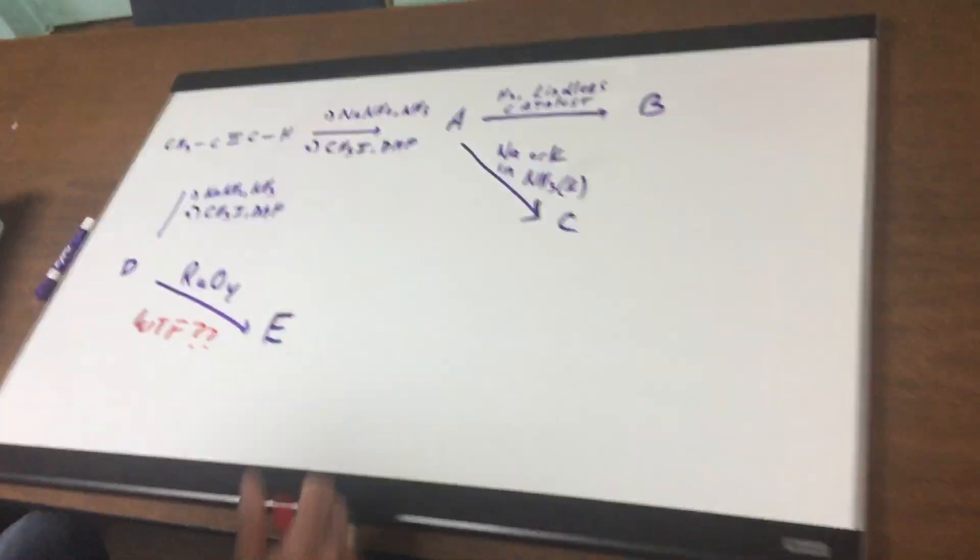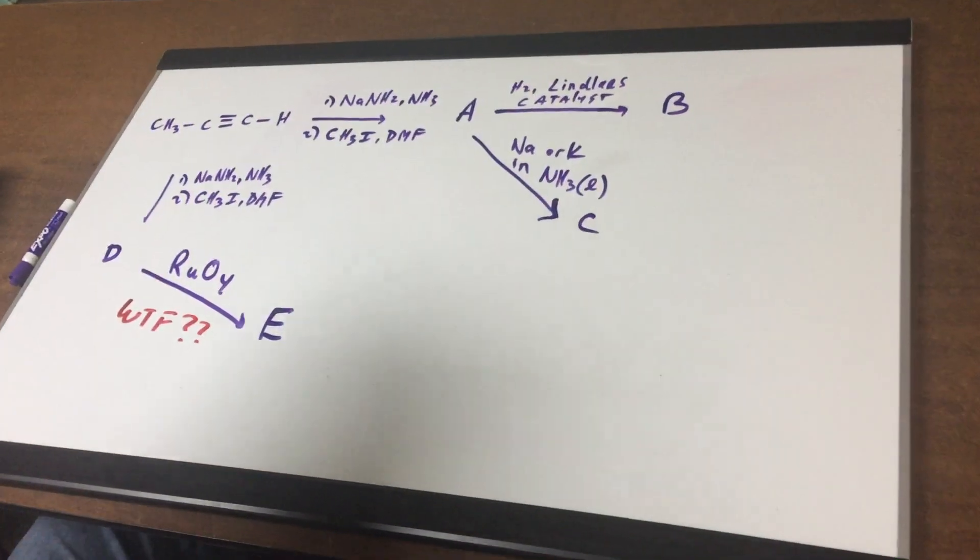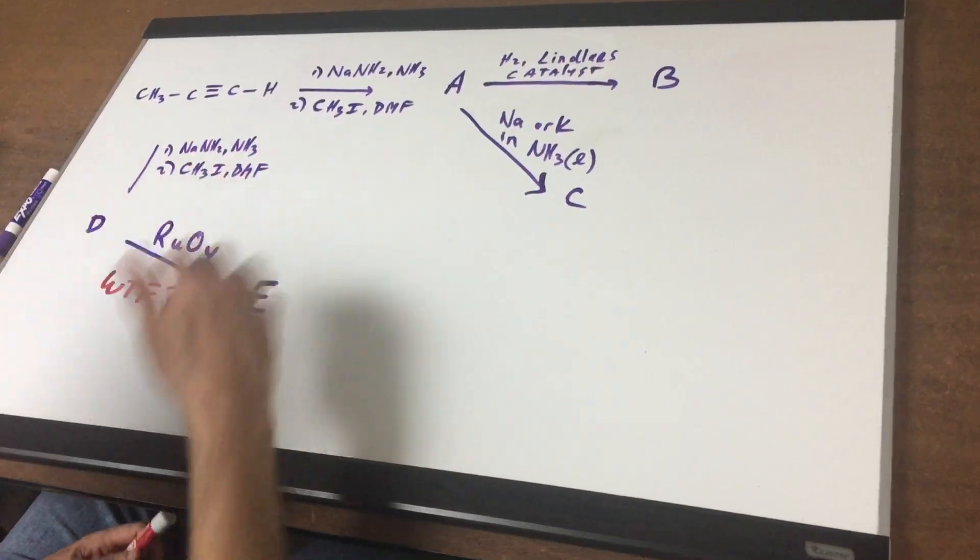Now what I gave you is I gave you a molecule called propine and I want to do a few things A, B, C, D, and E.